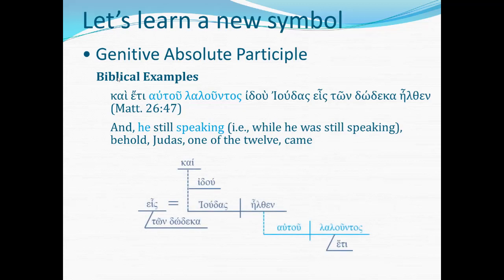Here's what it all looks like. Does your eye go right to the center of that baseline — Judas came — to find the core of the sentence? And do you see kai and idou as introductory conjunction and interjection? Do you see heis as an appositive renaming Ioudas, and then tōn dōdeka as modifying heis — one of the twelve? And then the genitive absolute in light blue: autou laloūntos, while he was still speaking, with eti modifying laloūntos. So there's our diagram for that sentence.